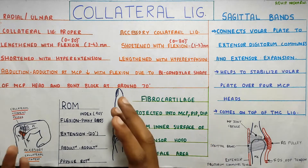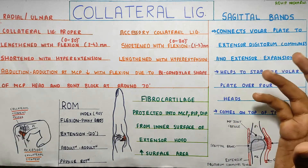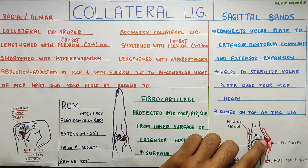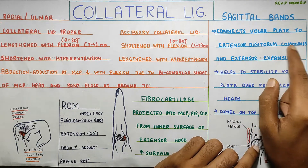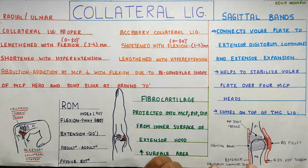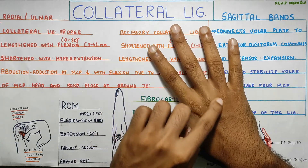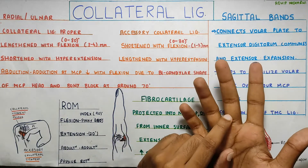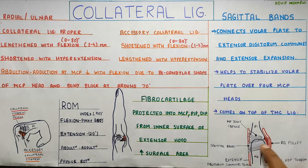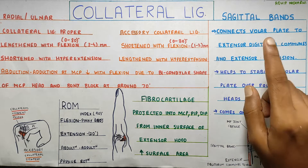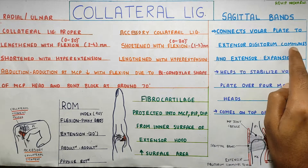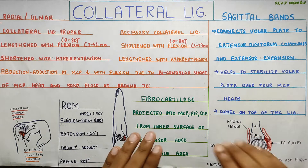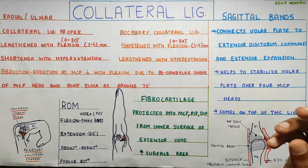Now let's move on to the sagittal band. These are structures that connect the volar plate — the extensor digitorum communis tendon and also the extensor expansion, which is basically the extensor hood. The extensor digitorum communis is present on the dorsal side and the volar plate is present on the front, so the sagittal band connects and binds both of these structures together. We will discuss the extensor hood in further videos.